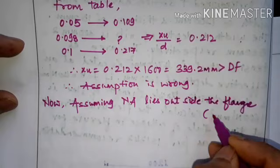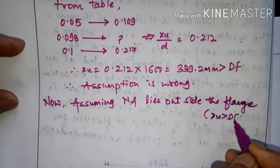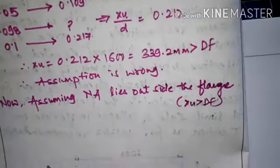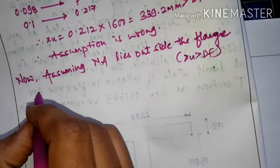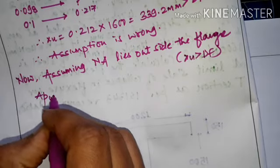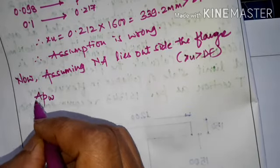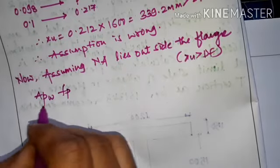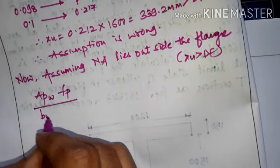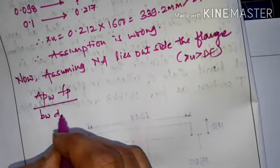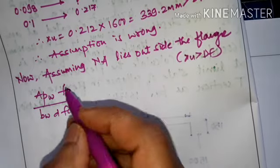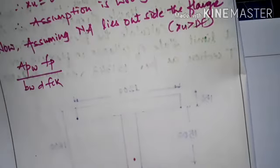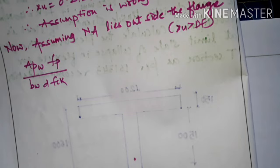When the neutral axis lies outside the flange, we calculate APW. Since AP = APW + APF, we need to find APF first using the formula: APF = 0.45 × FCK × (BF − BW) × DF / FP.